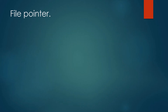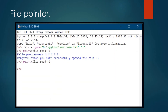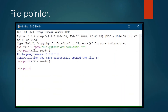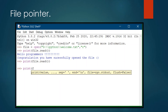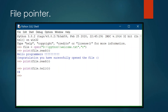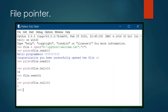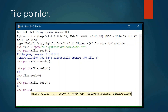Let's open the IDLE and apply these functions. First, let's print the position of the pointer using the tell function — the pointer is at position 84. Now let's pull the pointer to the beginning using seek(0). We can confirm the pointer is now at position zero, which means the beginning of the file. Now let's print the contents of the file again.